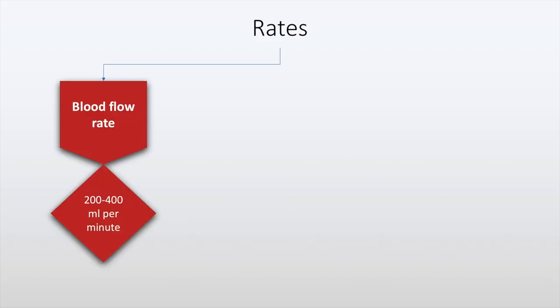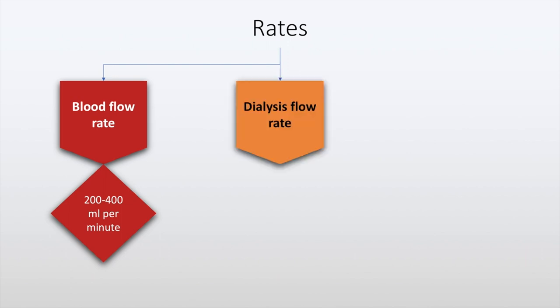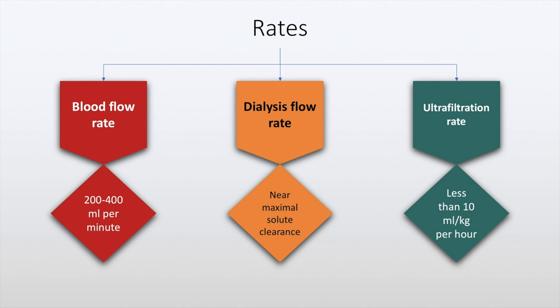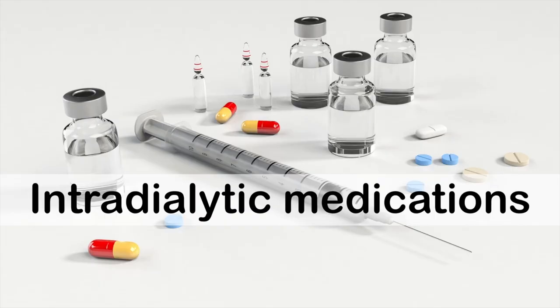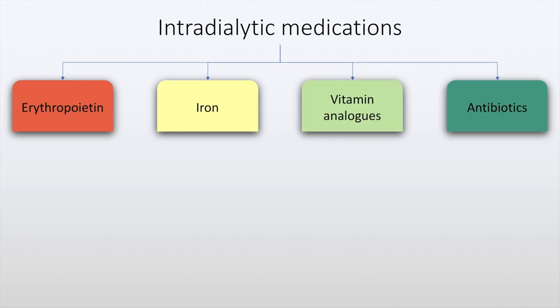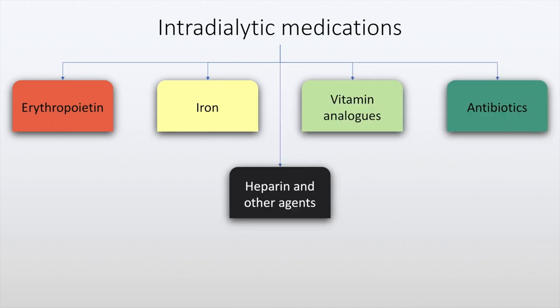The flow rates in dialysis include the blood flow rate, which is typically at 200 to 400 milliliters per minute. The dialysis flow rate is optimized for near maximal solute clearance and the ultrafiltration rate is usually less than 10 milliliters per kg per hour to avoid intradialytic hypotension. The medications which may be given during intermittent hemodialysis include erythropoietin, iron, vitamin analogues, antibiotics, and heparin.